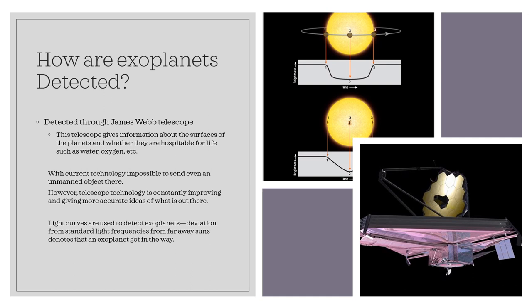So how are exoplanets detected? They're detected through the James Webb Telescope. This telescope gives information about the surfaces of the planets, whether they are hospitable for life, such as water, oxygen, etc.